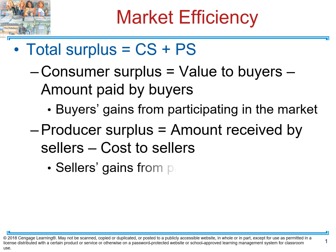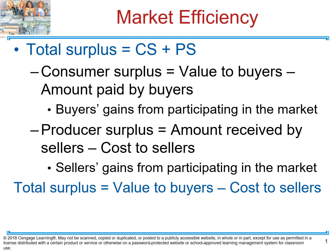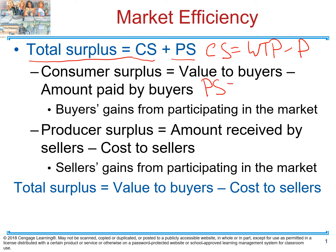There are a couple of things in Chapter 7. What is the total surplus on the market? Remember, we look at consumer surplus and producer surplus. Consumer surplus is willingness to pay minus the price. Producer surplus is price minus the cost. Therefore, total surplus on the market is consumer surplus plus producer surplus.